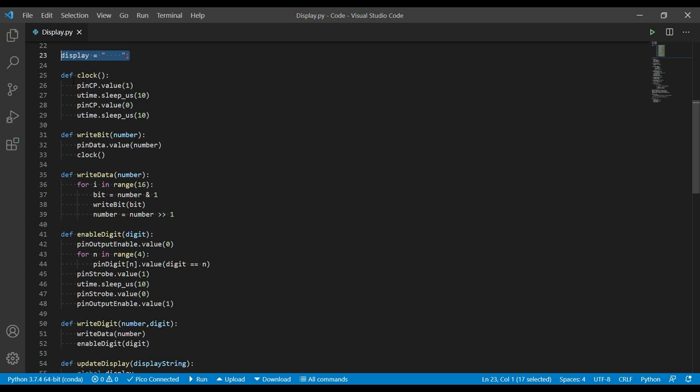So our clock. We take the clock pin high, we wait for 10 microseconds, we take the clock pin low, and then we wait another 10 microseconds. So to write a bit of data, we set the data pin and then we call the clock.